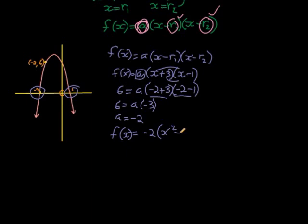Plus 3x minus 1 is plus 2x, and negative 3 times negative 1 is negative 3, and we just multiply it out.